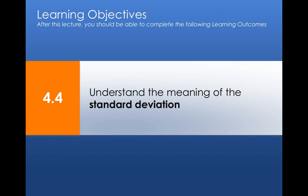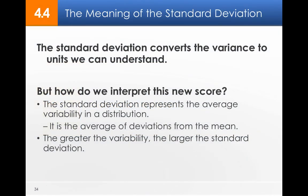Let's now kind of backtrack a little bit to standard deviation and think about what it actually means. It's giving us the variance in units we can understand, but how do we interpret that? We get that number 2.43, right? What does it mean? It represents the average variability in a distribution. It's the average of deviations from the mean. The more variability there is, the more spread out the scores are, the larger the standard deviation is.